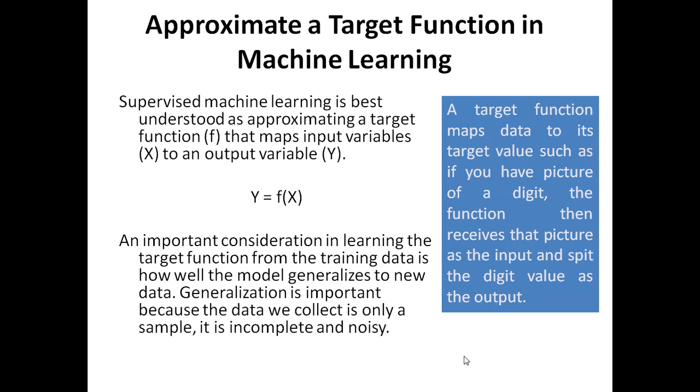function in machine learning. It is basically best understood as approximating a target function that maps input variable X to the output variable Y. We have some inputs there, and on the basis of that input we are just returning some output. The important consideration in learning the target function from the training data is how well the model generalizes.